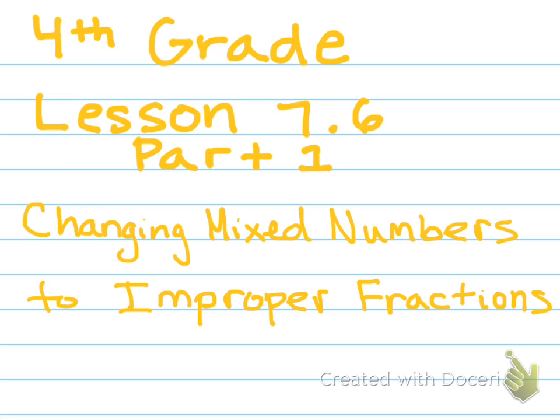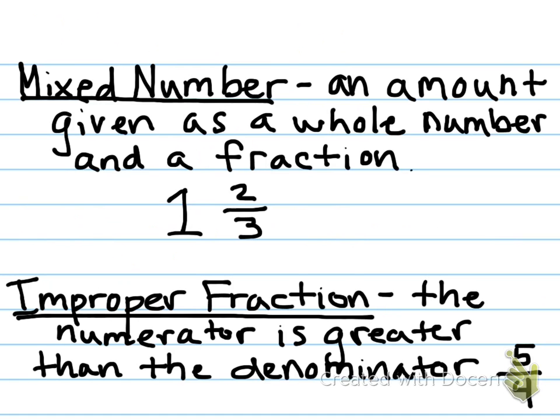Let's write down a couple definitions first. A mixed number is an amount given as a whole number and a fraction. This is our example, one and two-thirds. So, one whole and then two-thirds as well.